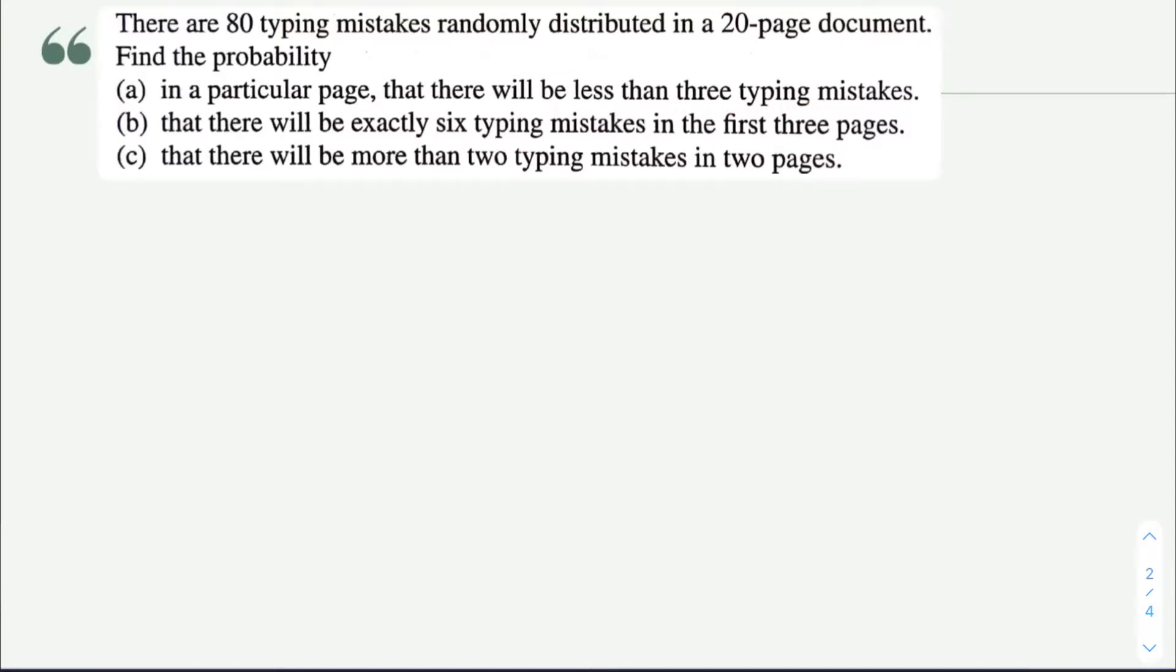So first and foremost, what you need to do is identify what kind of distribution it is. Now let's look at the question. It says there are 80 typing mistakes, which means it is something countable. So countable can have a discrete random variable, which is Poisson or binomial.